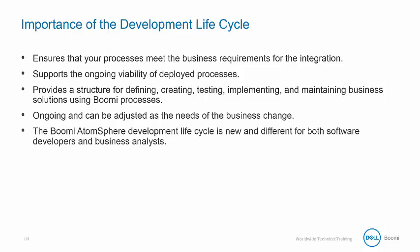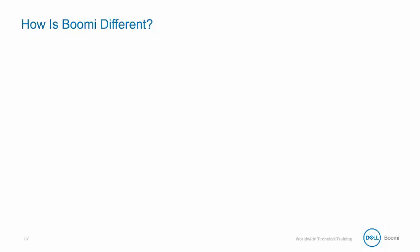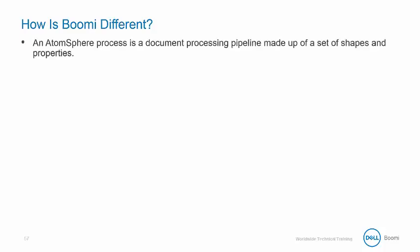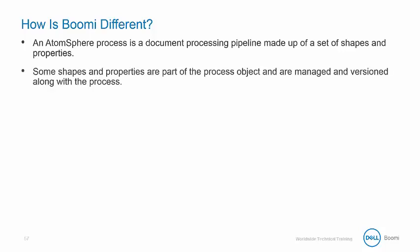The Boomi development lifecycle differs from typical code-based practices, and we'll review some of those differences shortly. You can think of an AtomSphere process as a document processing pipeline made up of shapes and properties. Some are part of the process object and are managed or versioned along with the process. For example, the SetProperties shape does not exist as an independent object in the Component Explorer.